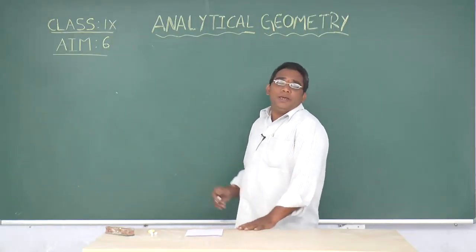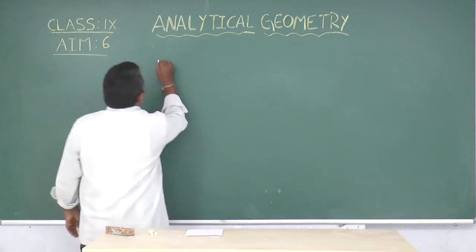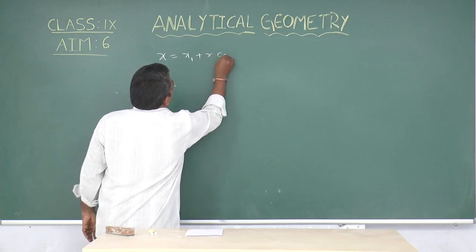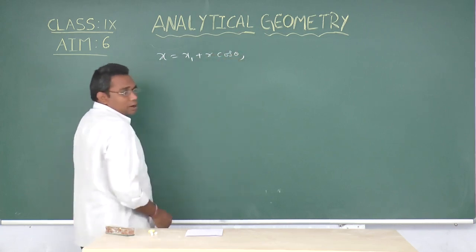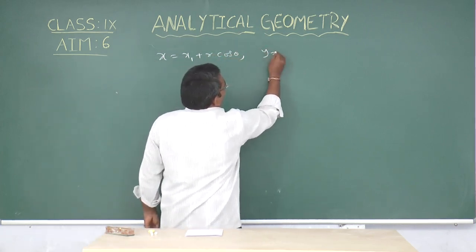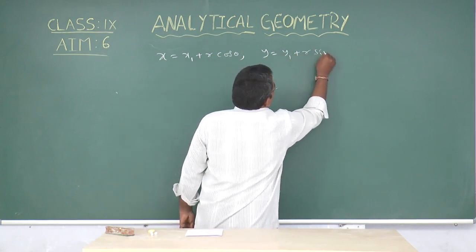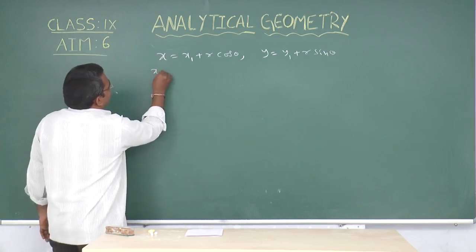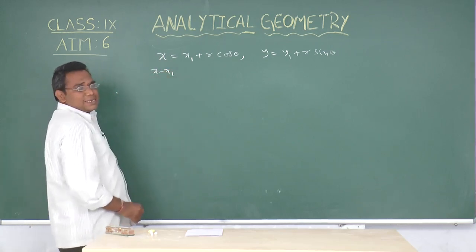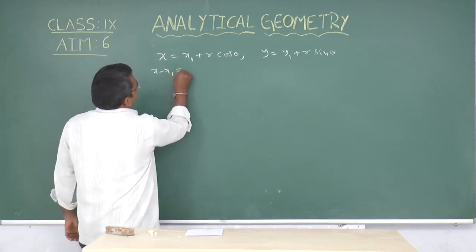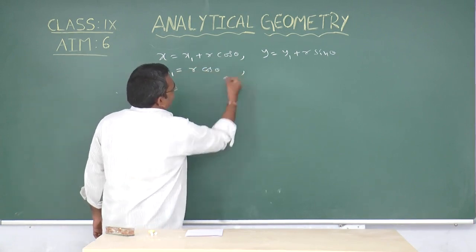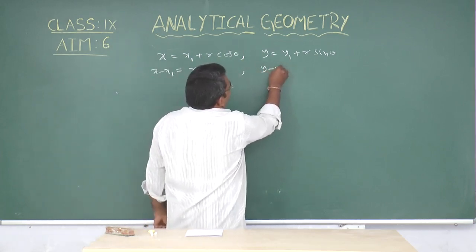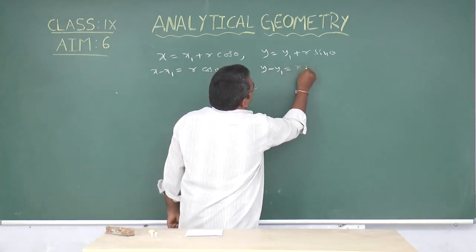From the parametric equations, x equals x1 plus r cos theta and y equals y1 plus r sin theta. From these, x minus x1 equals r cos theta, and y minus y1 equals r sin theta.